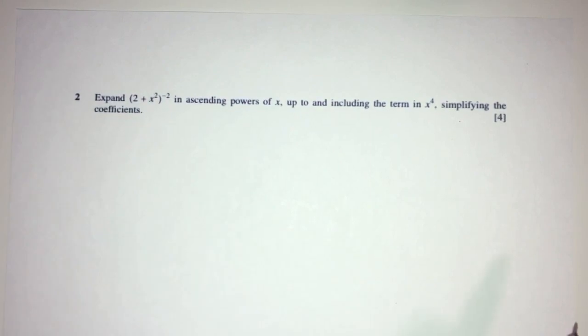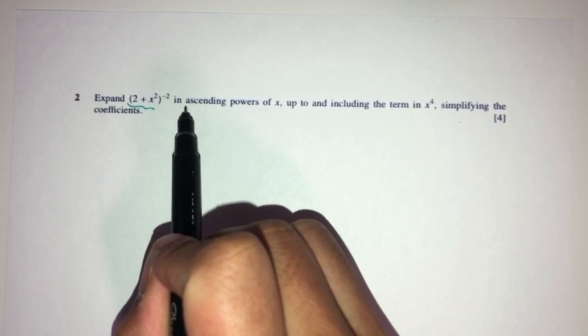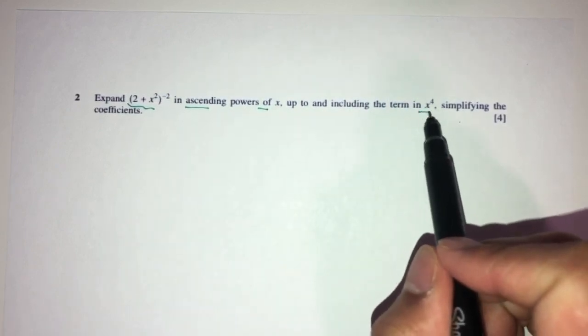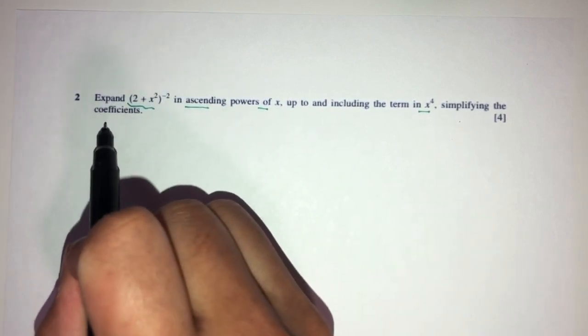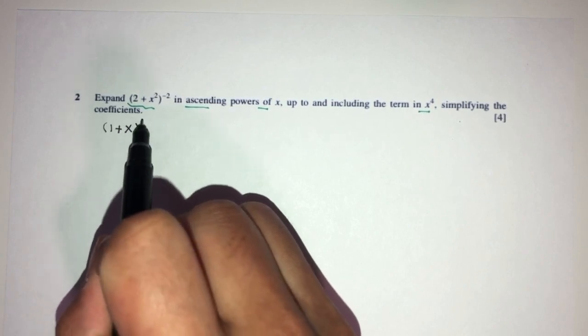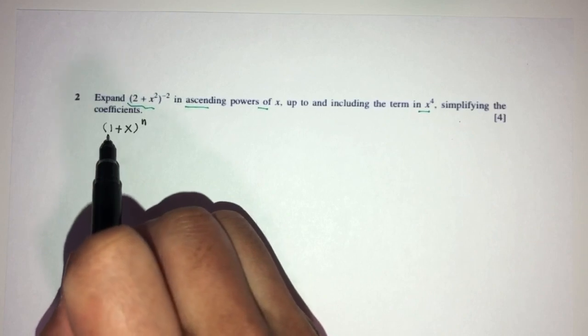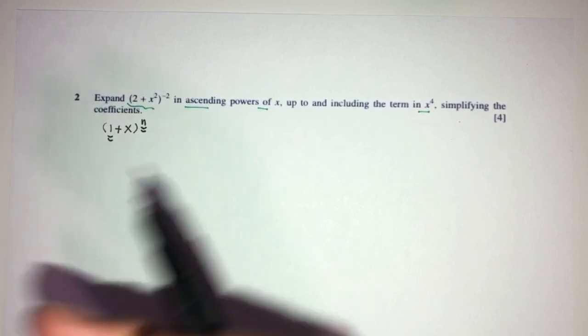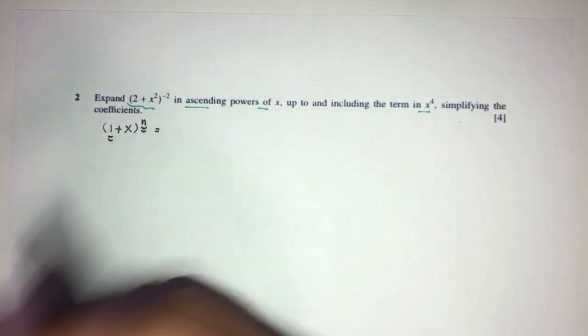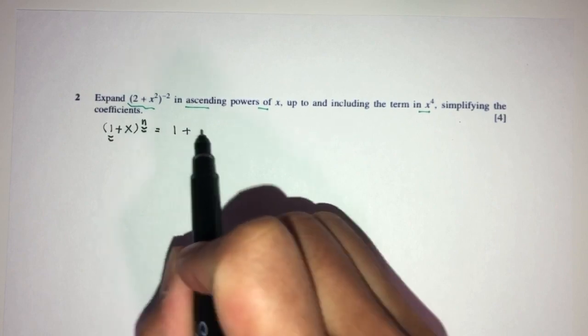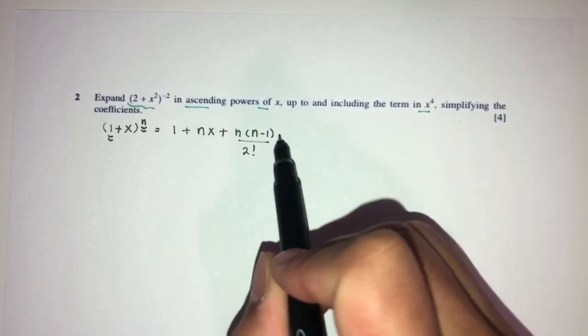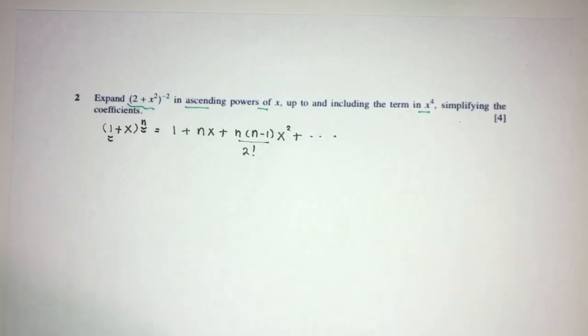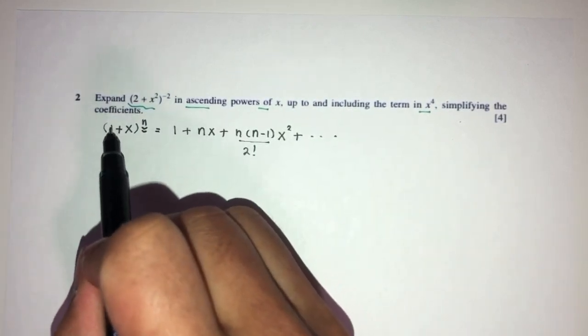Now, let's move on to question number two. So here, we have to expand this one in ascending powers of x, up to and including the term in x power 4. Now, first thing first, how would you expand this? You will use the binomial expansion. Now, we have to know there's a few conditions to use that. What is the condition? For example, let's say I have 1 plus x power n. For me to use this expansion, this have to be plus 1, and this have to be negative. Now, if that's the case, we can continue with the formula. It is 1 plus n times x plus n times n minus 1 over 2 factorial times x squared plus and so on. It will keep going on. But that's only possible when this one is plus 1 and this one is negative.